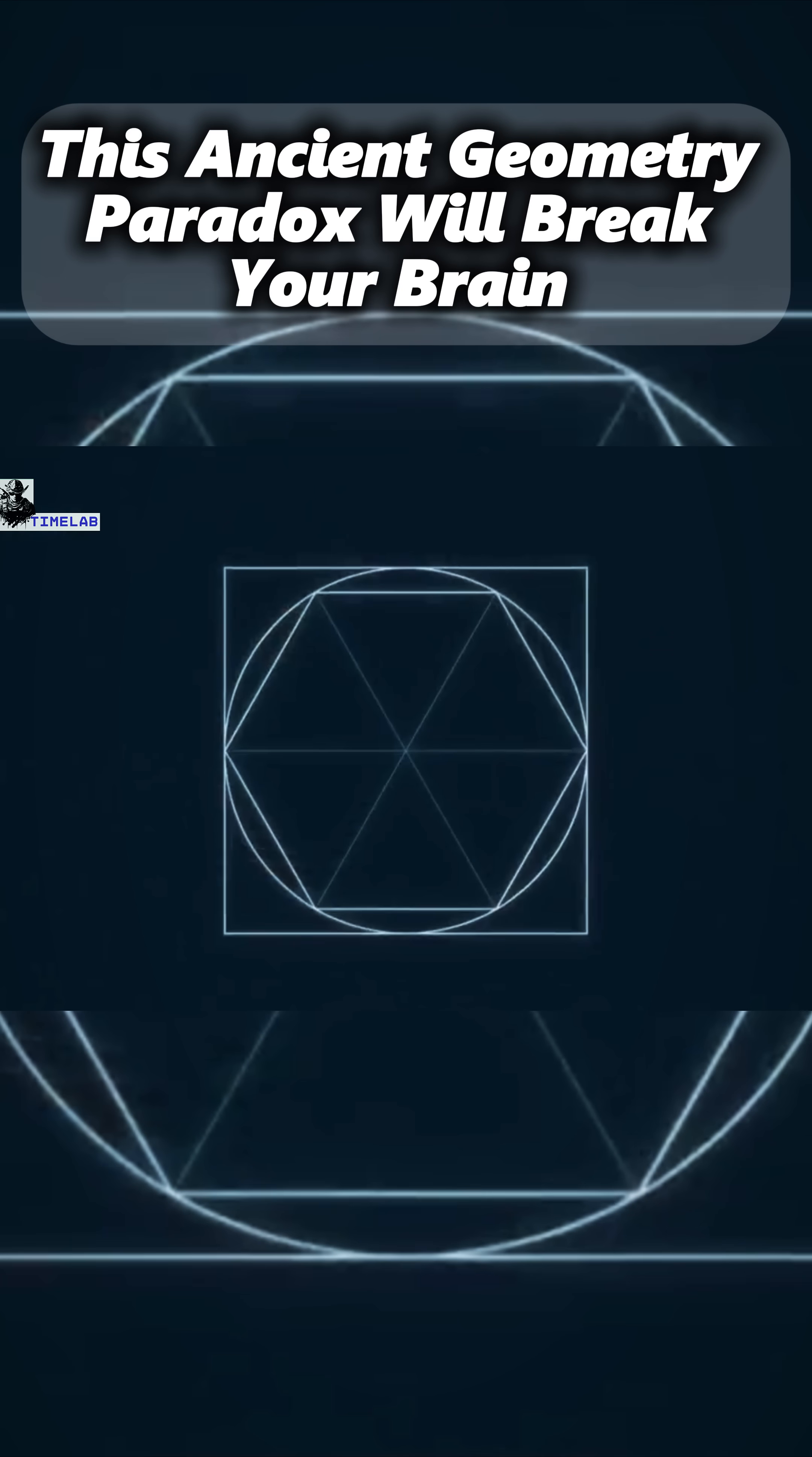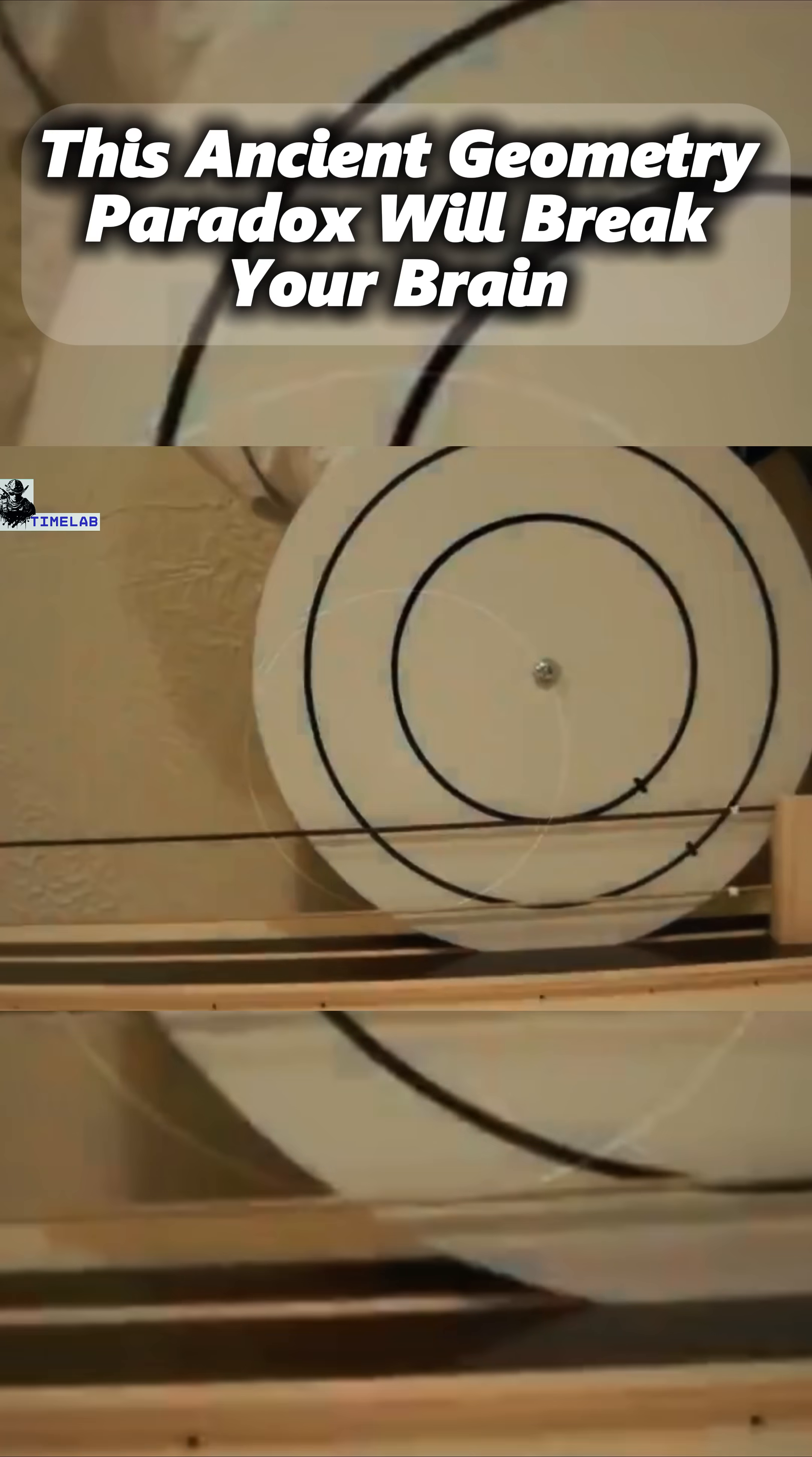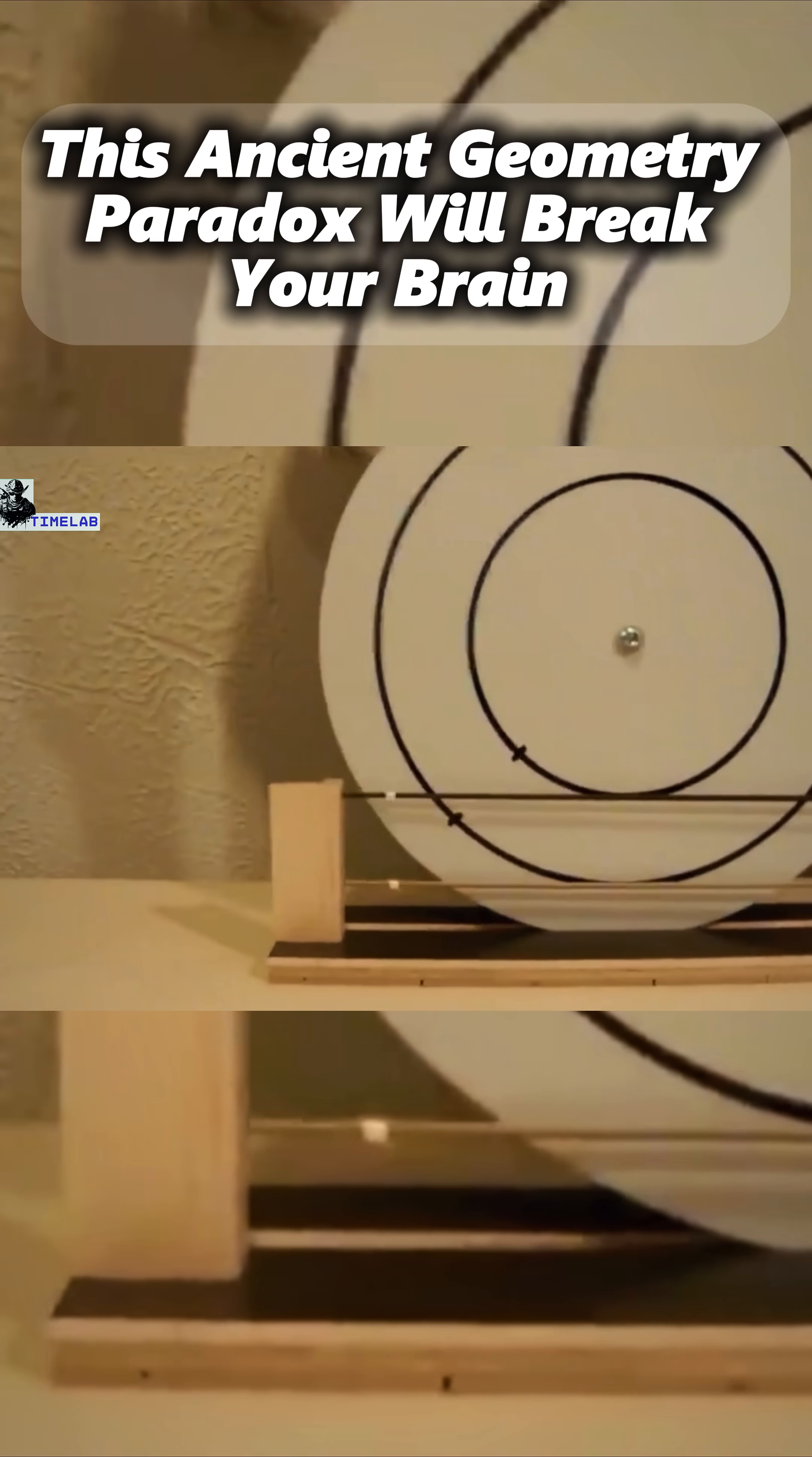You can think of those gaps in the small polygon's path as representing the amount of sliding. In simpler terms, the large circle is rolling, while the small circle is being dragged along. It's not just rolling, it's rolling and slipping.